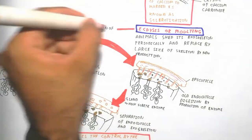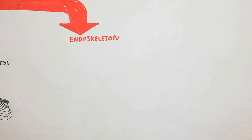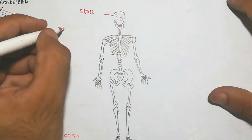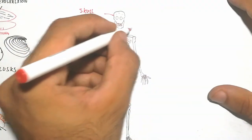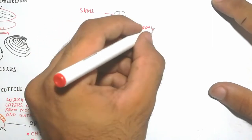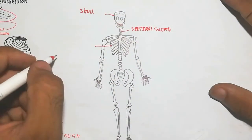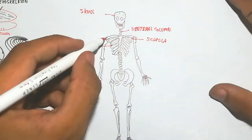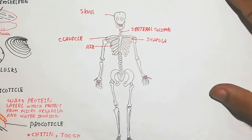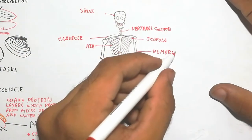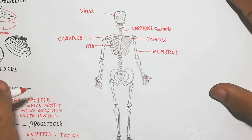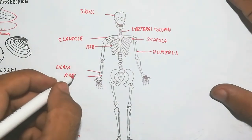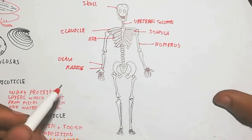Now we will discuss the endoskeleton — 'endo' meaning inside. In the human being, the skeleton contains the skull, axial skeleton, and appendicular skeleton. The axial skeleton is composed of the skull, vertebral column, and pelvis. The appendicular skeleton includes the ribs, humerus, femur, ulna, and radius.